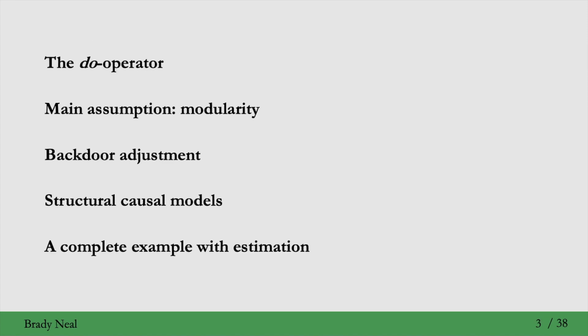Here's the outline of this lecture. We'll start with the do operator, which is something that comes in when we move from statistical quantities to causal quantities. It's absolutely key for causal quantities. Then we'll be moving to the main assumption that underlies the causal models we'll be looking at. This assumption is known as modularity.